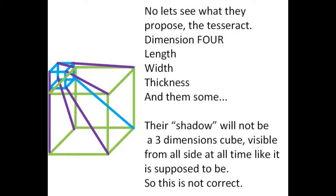The problem with the tesseract is that it is a cube within a cube which becomes deformed, and it projects only a two-dimensional shadow — not a three-dimensional shadow. This is a proof that this is likely a problem, and that view of the fourth dimension is not correct.